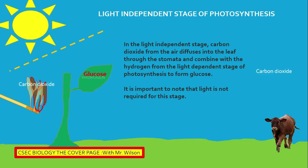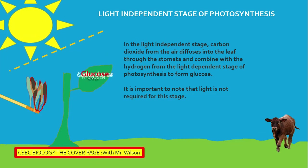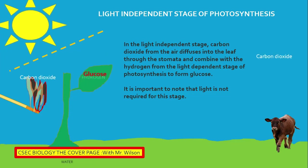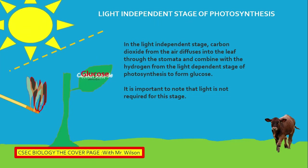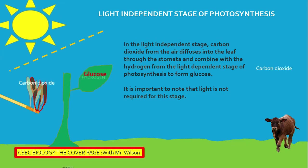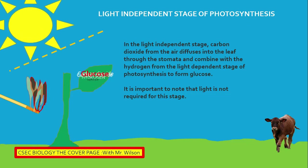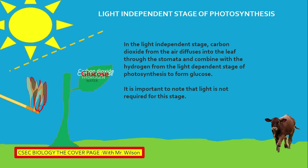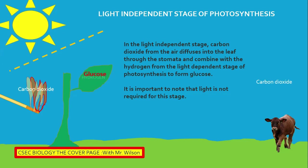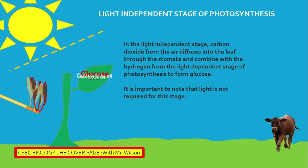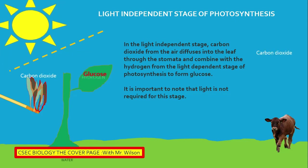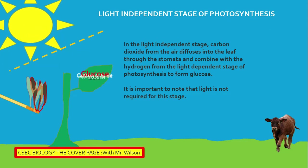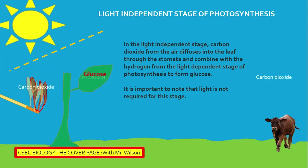After glucose has been formed, the glucose in some cases is converted to other products like starch, carbohydrate, protein, and fat. These we consume on a daily basis.